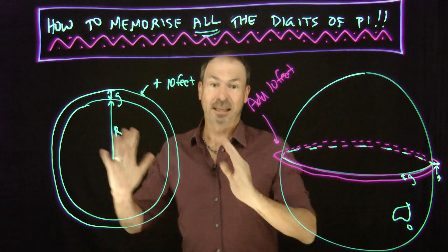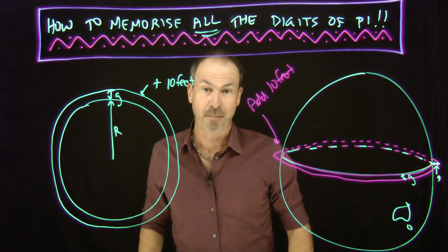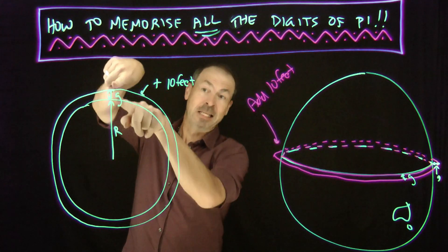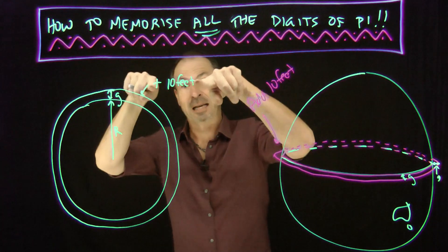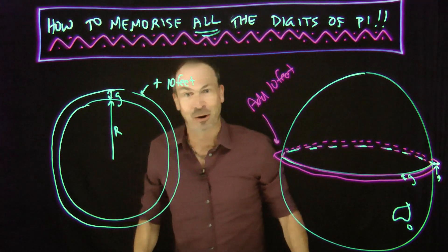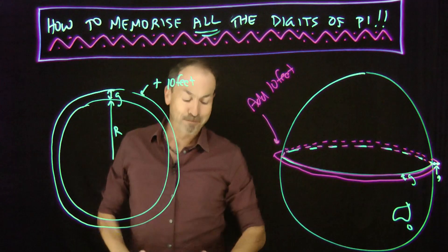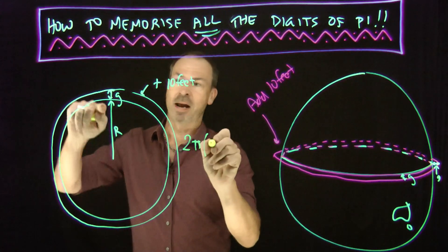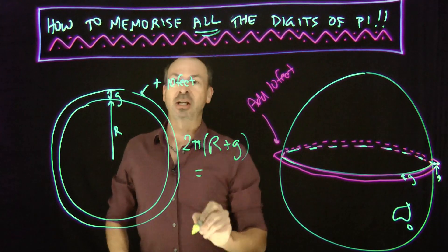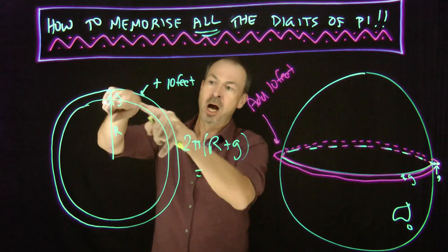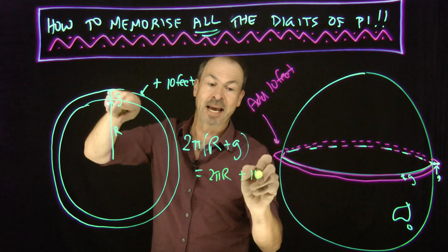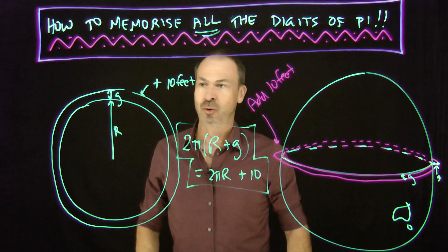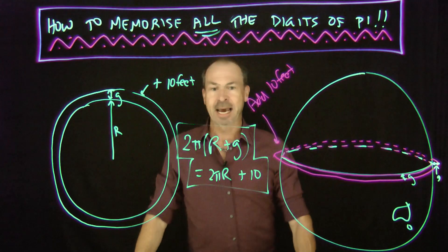I don't know the radius of the earth, so let me get as much maths going as I can before needing actual numbers. I know the radius of the small circle, the radius of the big circle is r plus G, and the circumference of the bigger circle is 10 feet more than that of the smaller circle. So the circumference of the big circle is 2π(r + G), which equals the circumference of the smaller circle, 2πr, plus an extra 10 feet. Can I get to G from here?